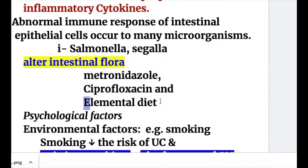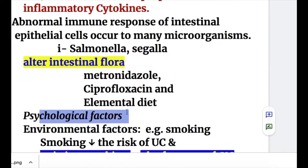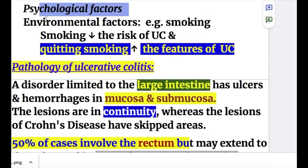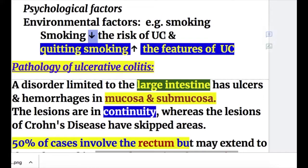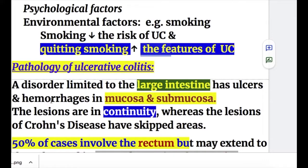Elemental diet and psychogenic factors may also cause ulcerative colitis. Among environmental factors, smoke is one substance that actually decreases the risk of ulcerative colitis, and quitting smoking increases the features of ulcerative colitis.